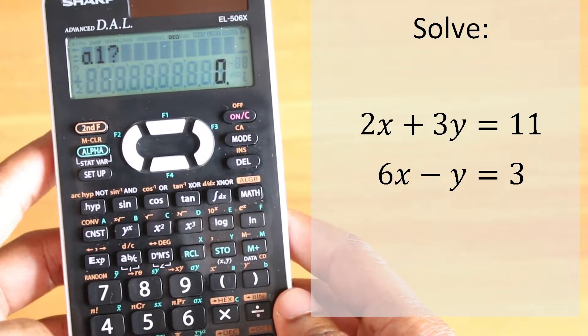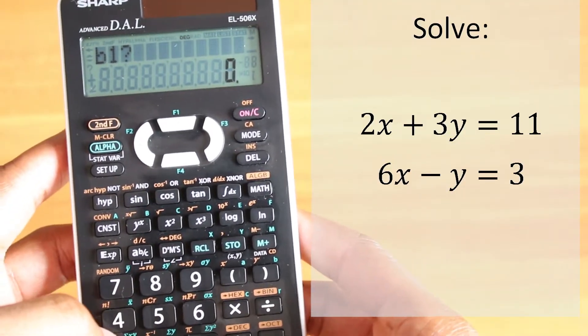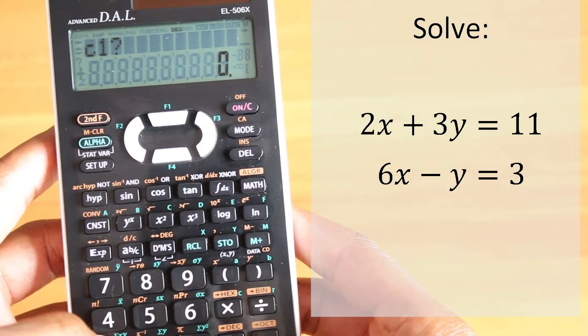For the first equation I'll put in 2, b is 3, and c is going to be 11, right.